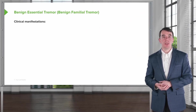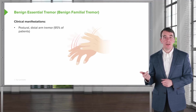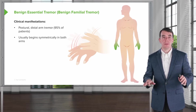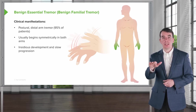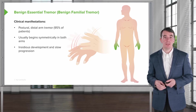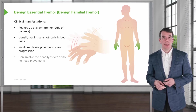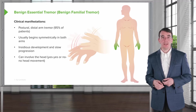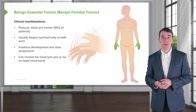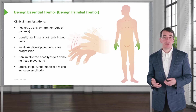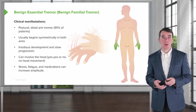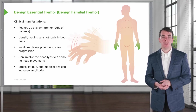Clinical manifestations include postural tremor in the distal arms in 95% of patients, usually beginning symmetrically. It can be insidious in onset and slow in progression, worsening with age. It can involve the head — called head titubation — where the head moves in a yes-yes or no-no pattern. Stress, fatigue, and medications can increase amplitude, while alcohol reduces it. Alcohol is not encouraged as treatment but is a useful diagnostic indicator when taking history.